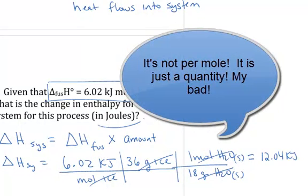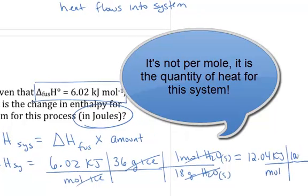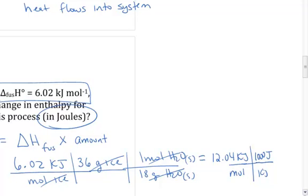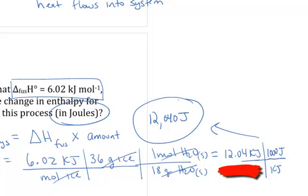But I was asked to report this value in joules, so I'm going to convert that to joules. There are 1,000 joules in 1 kilojoule. So it's going to be about 12,040 joules of heat energy absorbed by the system, absorbed in this case, when we melt the ice.